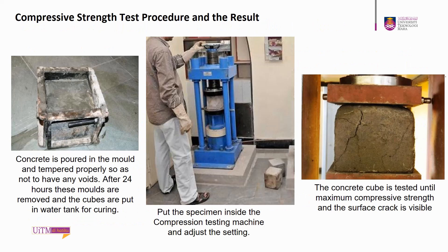How are the concrete cubes made? The concrete is poured in the mold and tampered properly so as not to have any voids. After 24 hours, the molds are removed and the cubes are put inside a water tank for curing, up to 28 days. After 28 days, the cubes are tested using a compression testing machine until the maximum compressive strength is reached and surface cracking is visible. The monitor will show the maximum compressive strength value achieved. The compressive strength value at 28 days must be equal to or greater than the designed characteristic strength for the concrete mix to be approved.